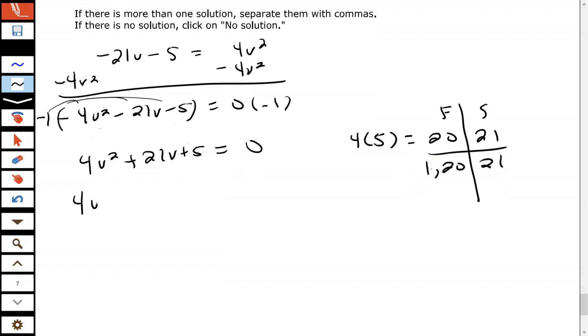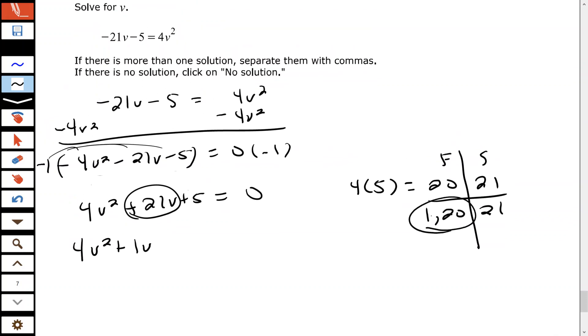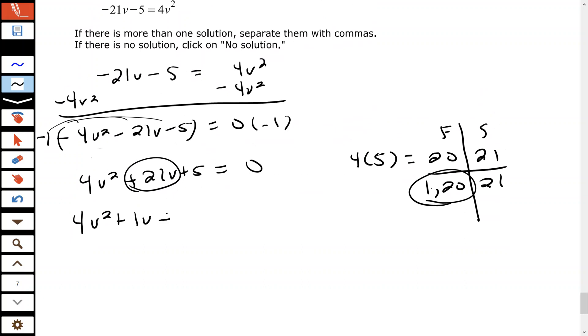So we have 4v² + 1v—remember, we're splitting the middle term using those two factors that we just found—plus 20v, because 1 plus 20 is 21. Keep the plus 5 = 0.